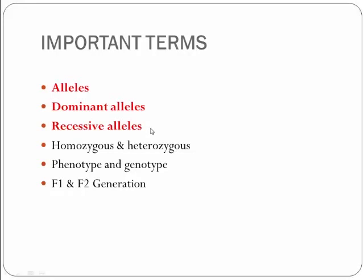Alleles are the alternative form of genes. Dominant alleles are those alleles which are able to express themselves also in the presence of the contrasting character. And recessive alleles are those alleles which are not able to express themselves due to the presence of the dominant allele.